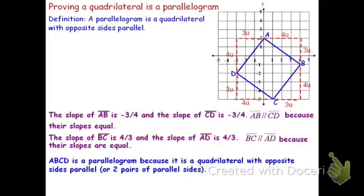So again, in order to prove that you have a parallelogram, prove that you have opposite sides parallel. The way we prove parallel is we look at the slopes and show that they're equal. Equal slopes means parallel segments, two pairs of parallel sides, and you've got a parallelogram. Thank you for watching this video, and I hope that it helps.